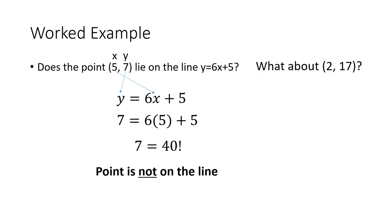If we look at an example where it actually does work, for example, the point (2, 17). So we know that we've got the same equation, we substitute in the first number for x, second number for y. So do this one a little bit quicker. So it's 17 = 6(2) + 5. Is that true?